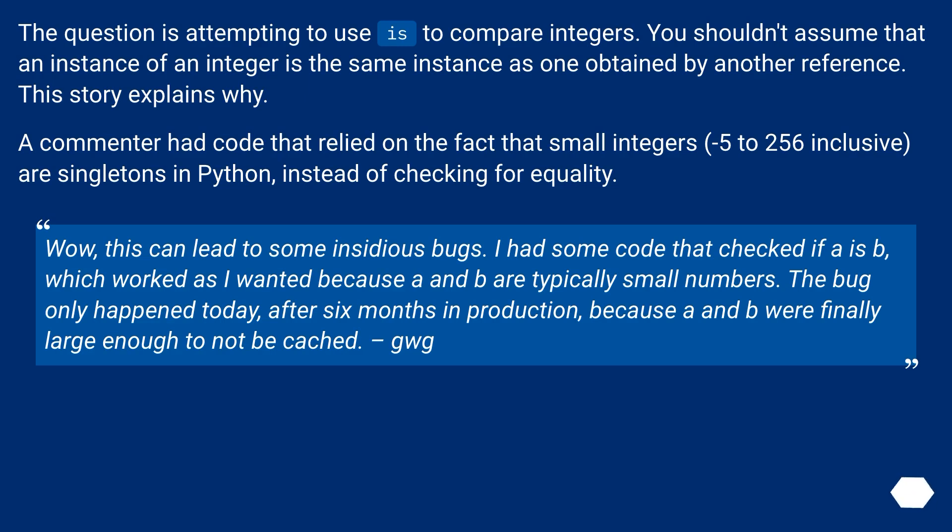Wow, this can lead to some insidious bugs. I had some code that checked if A is B, which worked as I wanted because A and B are typically small numbers. The bug only happened today, after 6 months in production, because A and B were finally large enough to not be cached.